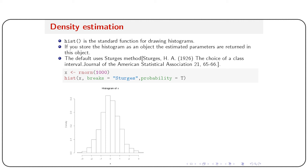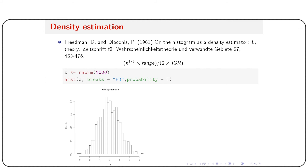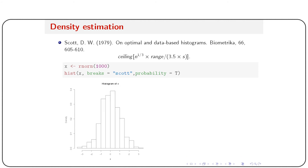Sturges' method is from a 1926 paper in the Journal of the American Statistical Association. The Freedman-Diaconis (FD) method from their 1981 paper can be used with breaks = 'FD'. The Scott method from a 1979 Biometrika paper can be used with breaks = 'Scott'. Each produces a slightly different density estimate.